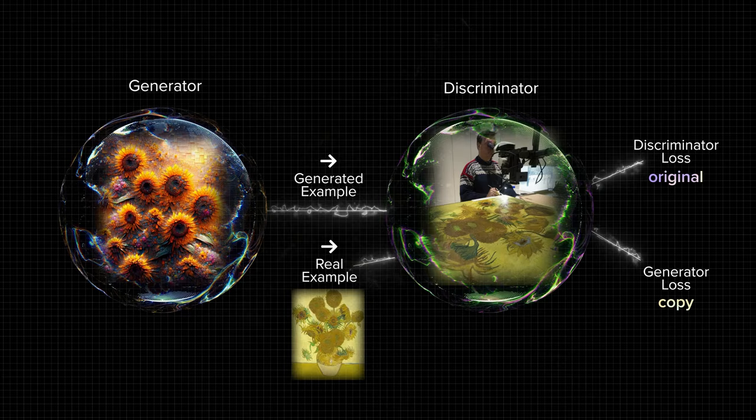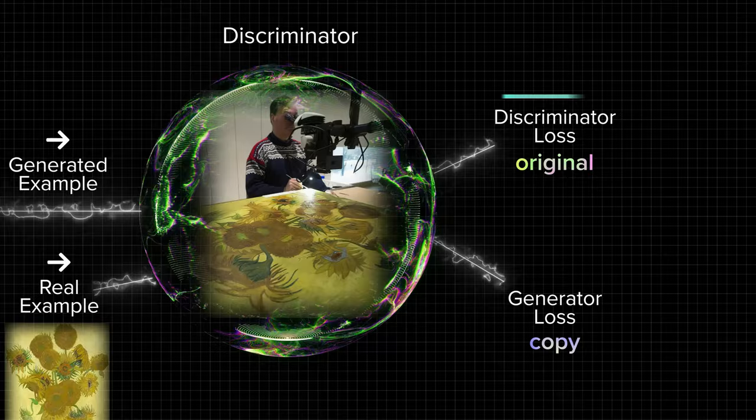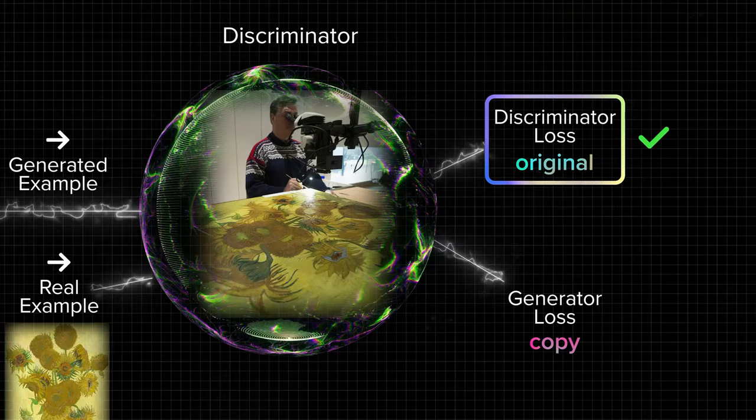In the beginning, the mechanical artist doesn't produce a convincing result. But with each iteration, the network improves its performance. When a generator is finally able to fool a discriminator and a human, the process is considered a success.